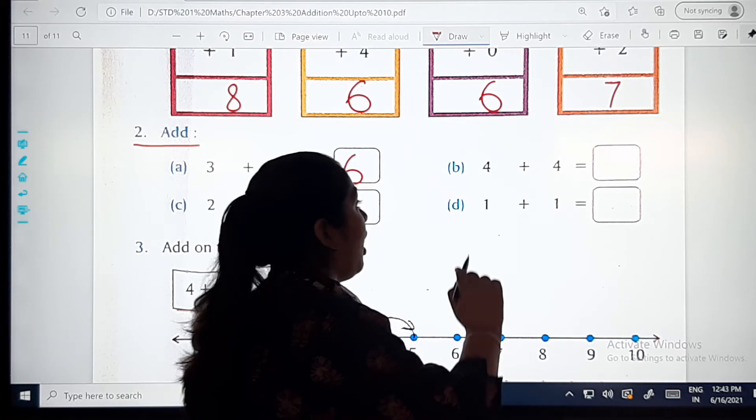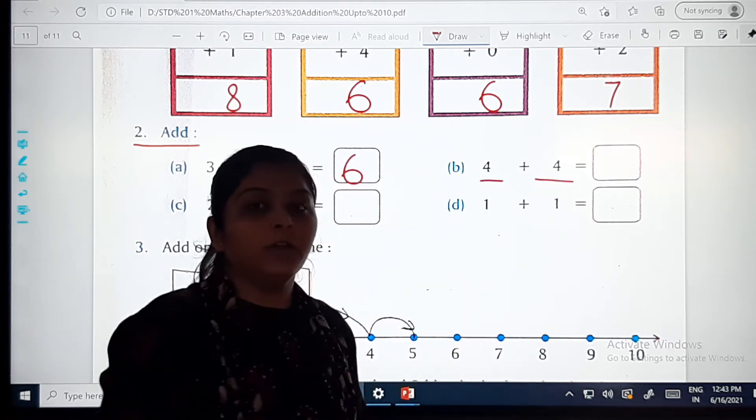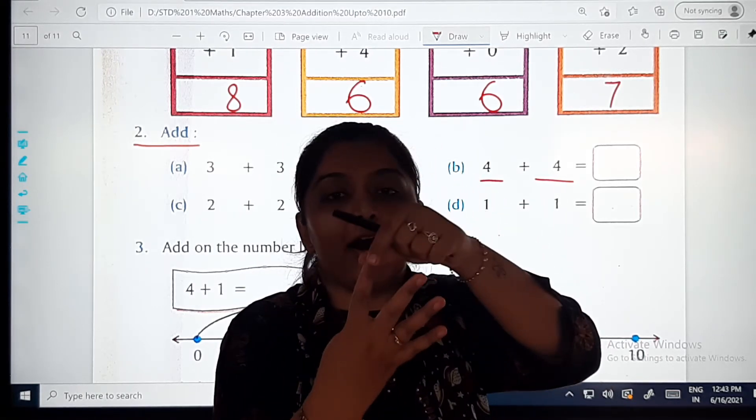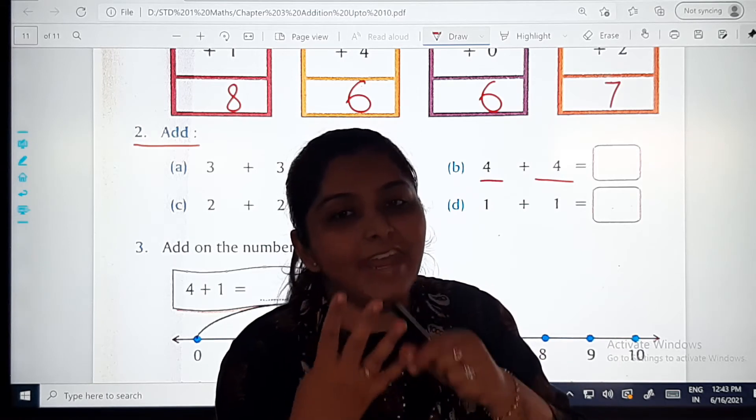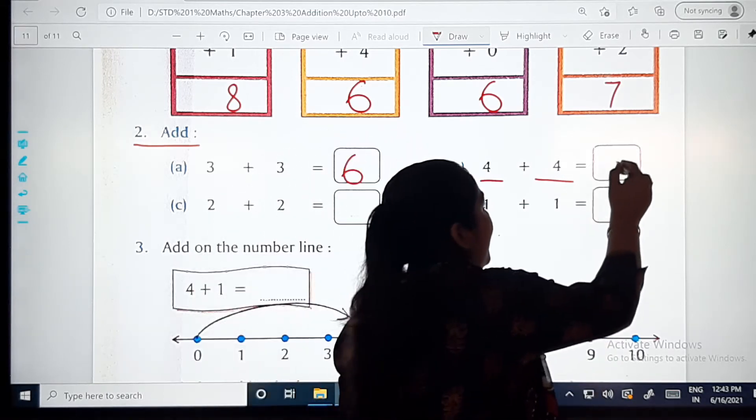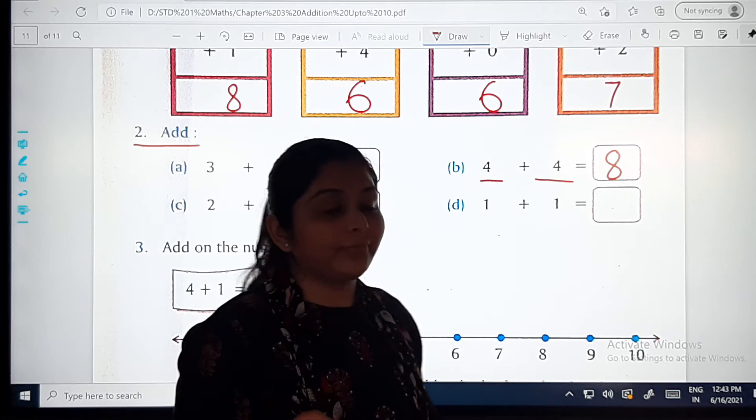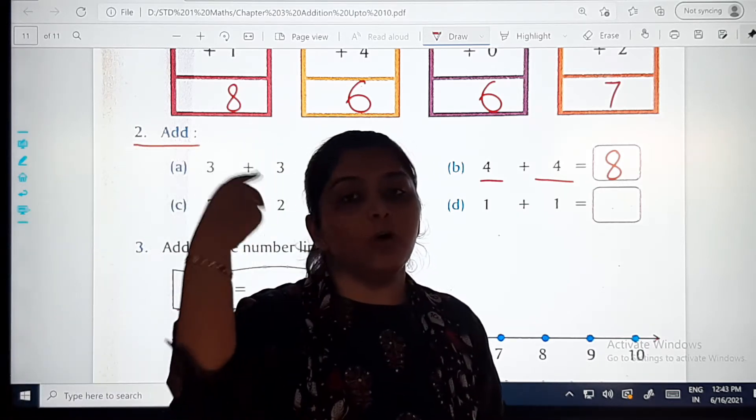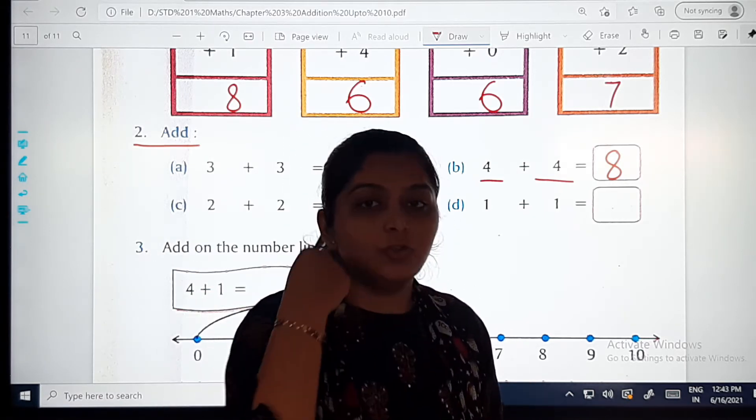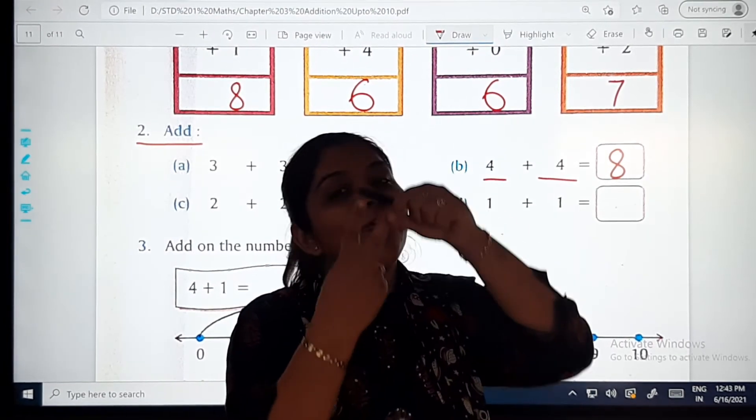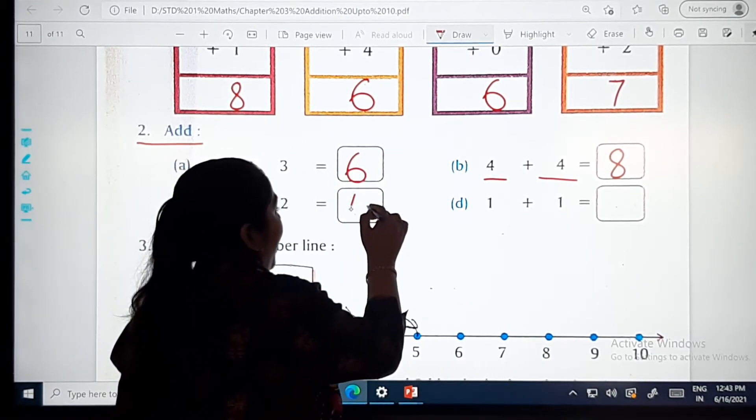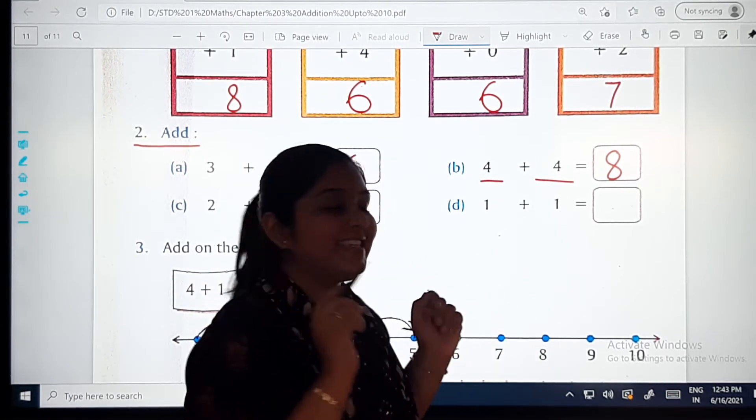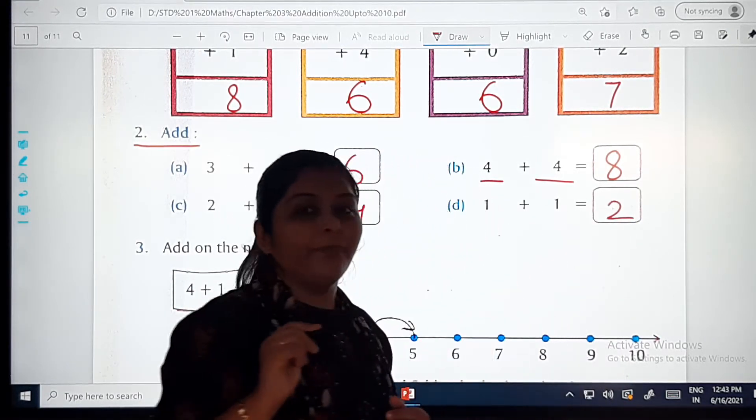The B one: four plus four. So take four as a base and you have to add four more. Five, six, seven and eight. So eight will be your answer, dear children. Next: two plus two. Toh hum ek two ko base mein lenge and we have to add two. Three and four. So four will be your answer. Next: one plus one. This is so easy, that is two.